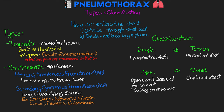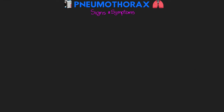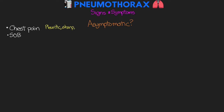Let's talk about some of the signs and symptoms of a patient with a pneumothorax. For patients that have a small primary spontaneous pneumothorax, they can actually present asymptomatic sometimes, or they may exhibit some mild symptoms such as chest pain or shortness of breath. For patients that are having pain from a pneumothorax, this is usually going to be a pleuritic pain — sharp, it can be severe, and it can even radiate to the shoulder on that same side.